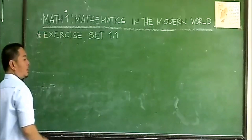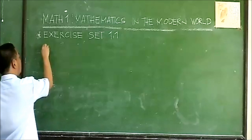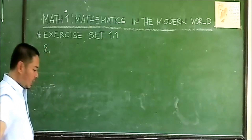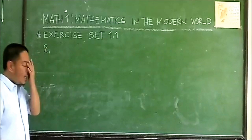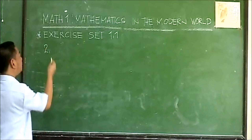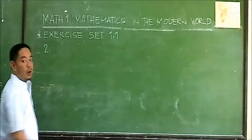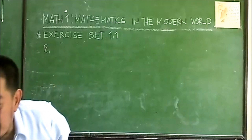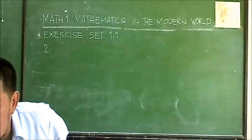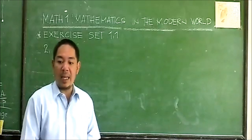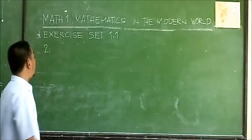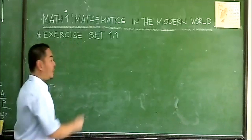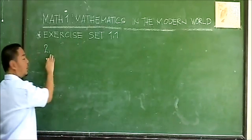So let's solve number 2. Number 2 is — in your notes, in your module, page 13. Page 13 in your module is Exercise Set 1.1. That is number 2.